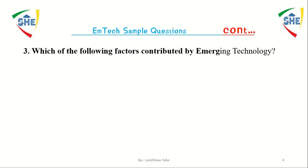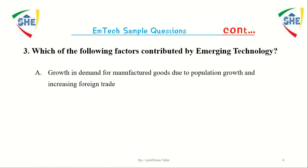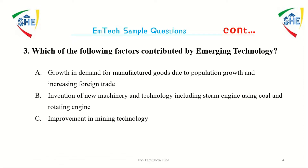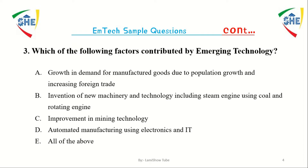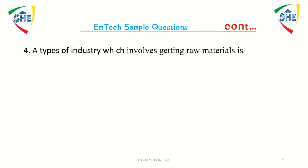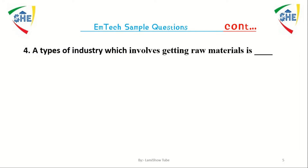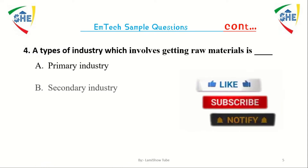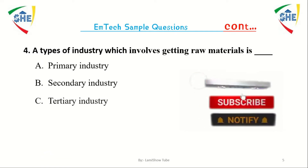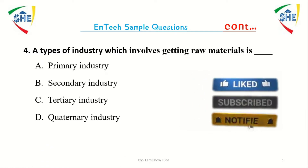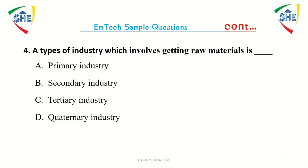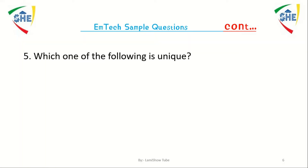Which one of the following factors is contributed by emerging technology? A type of industry which involves getting raw material is dash. Which one of the following is unique?